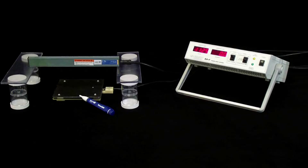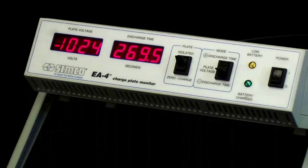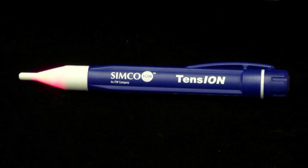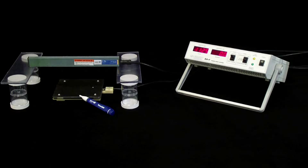Let's start by explaining the equipment we'll be using. Here we have a charge plate monitor, static neutralizing bar, and voltage detector. The charge plate monitor or CPM is a tool used to measure the effectiveness of ionization. To do this, the CPM is charged and then brought down using ionization.